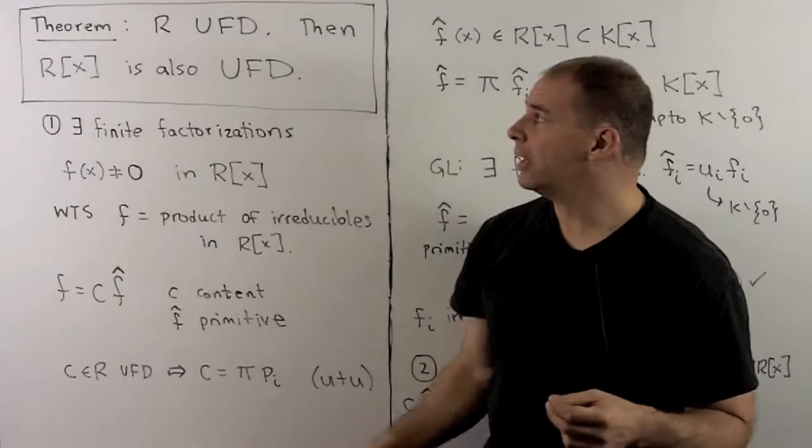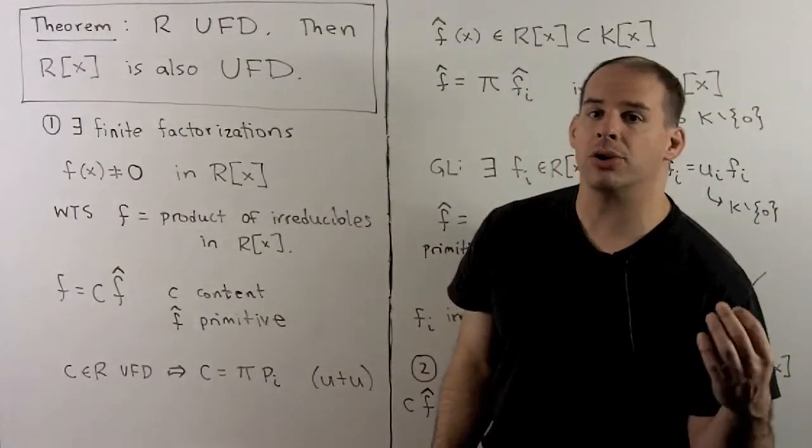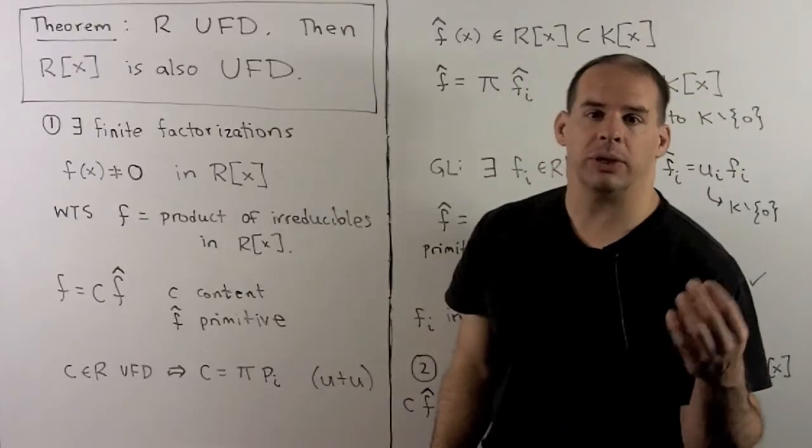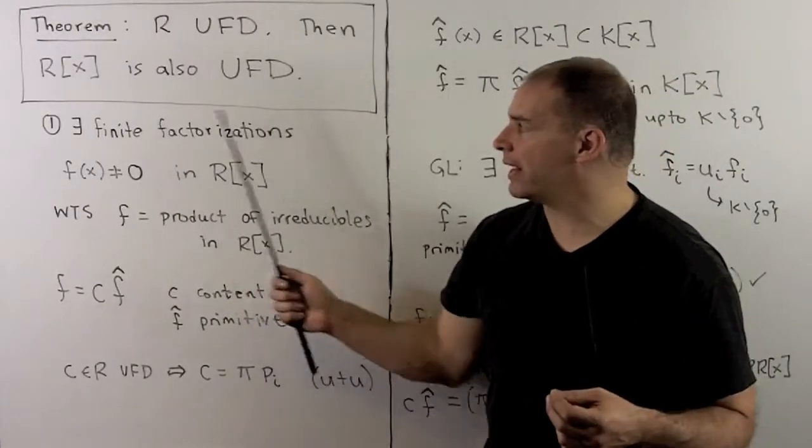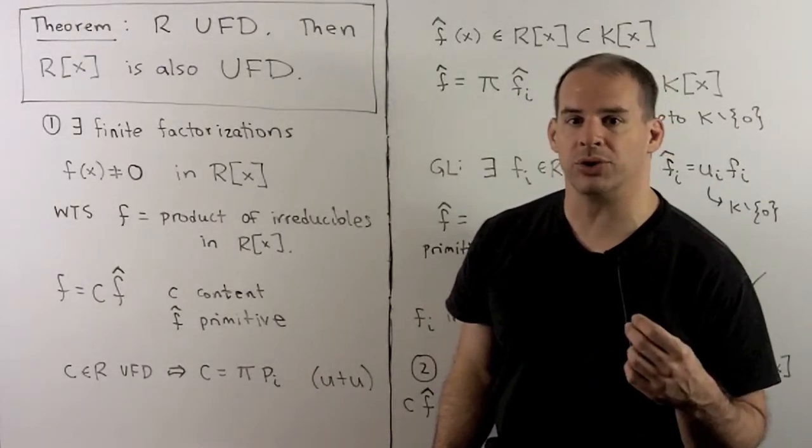We finish with our main theorem. R is a UFD. Then the polynomials in x over R also form a UFD. To show this, we need two things. First, that there exist finite factorizations into irreducibles for non-zero polynomials over R.